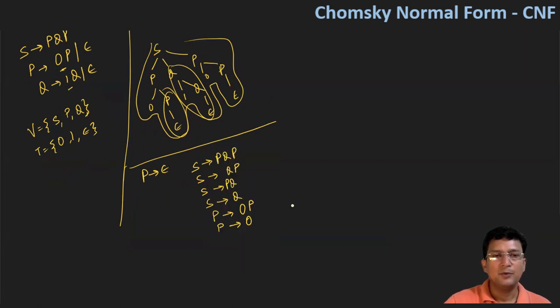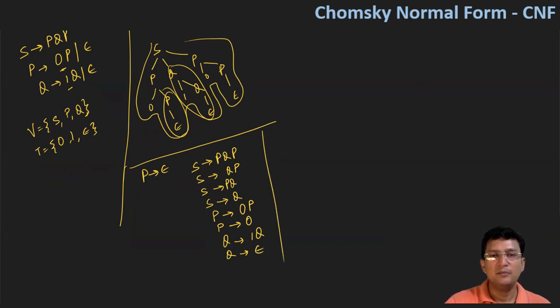The productions are: Q produces one Q, and Q produces epsilon. In this step, P produces epsilon has been removed. In the next step, we remove Q produces epsilon.